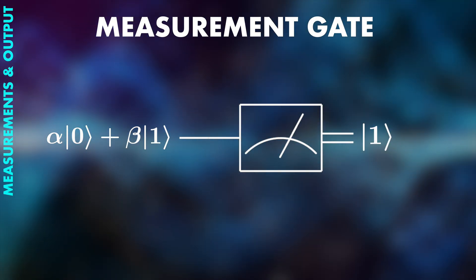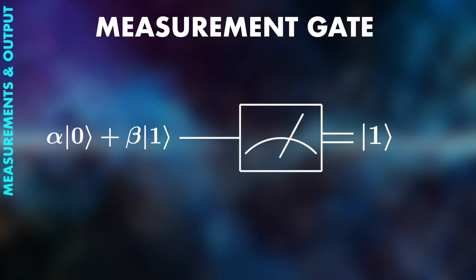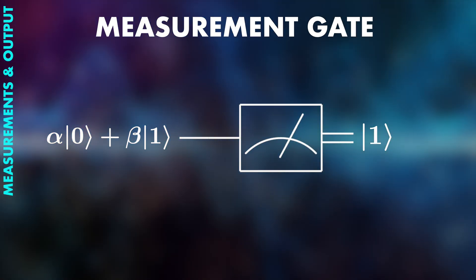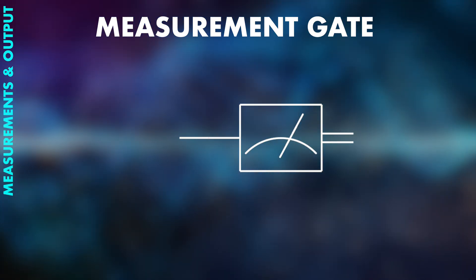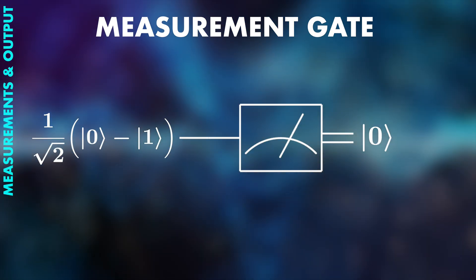Once a measurement is performed, a quantum state collapses into one possible outcome, and that is the measurement result. An important consequence of this is that measurements destroy superpositions and entanglement.